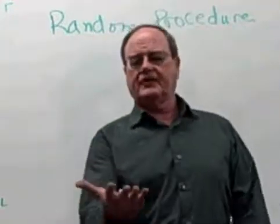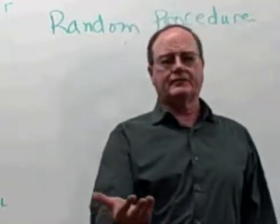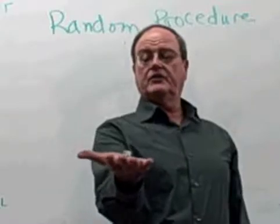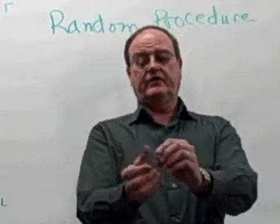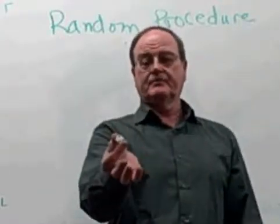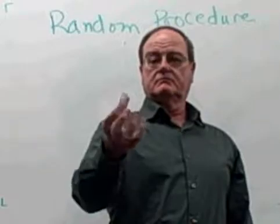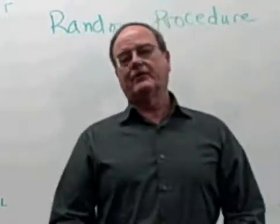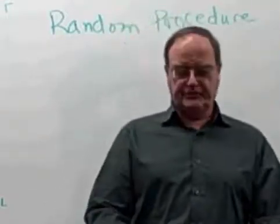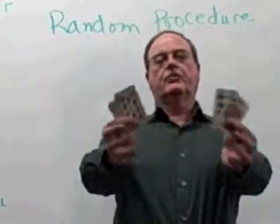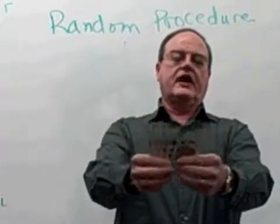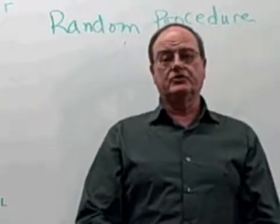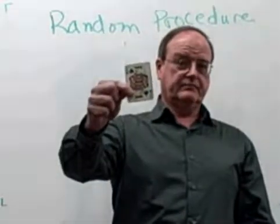I'll use this example several times today: rolling a die. Well-defined — we know exactly that one of these six sides has to come up. Another example of a well-defined procedure is I've taken four cards from a deck of cards, and my procedure is to mix them up and randomly choose one of the cards.